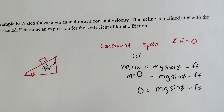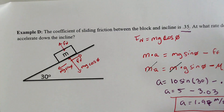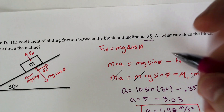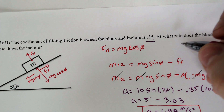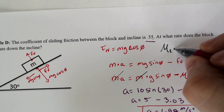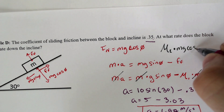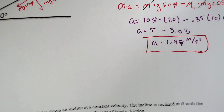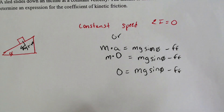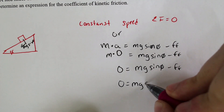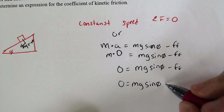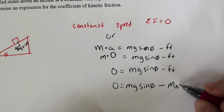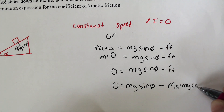What is the force of friction? The force of friction is the normal force times mu k. Just like our previous example, mg cosine theta equals the normal force, so the force of friction is mu k times mg cosine theta. We plug that in: 0 equals mg sine theta minus mu k times mg cosine theta.